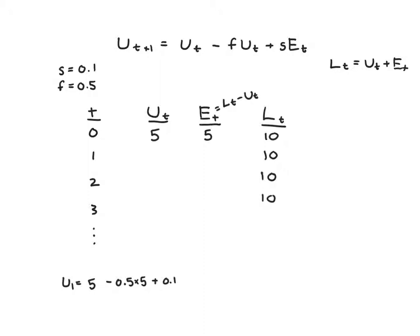Plus the number of people who separate from their jobs, which is 0.1 - that's s - times Et, which is 5. So we get 5 minus 2.5 plus 0.5, which is 3.